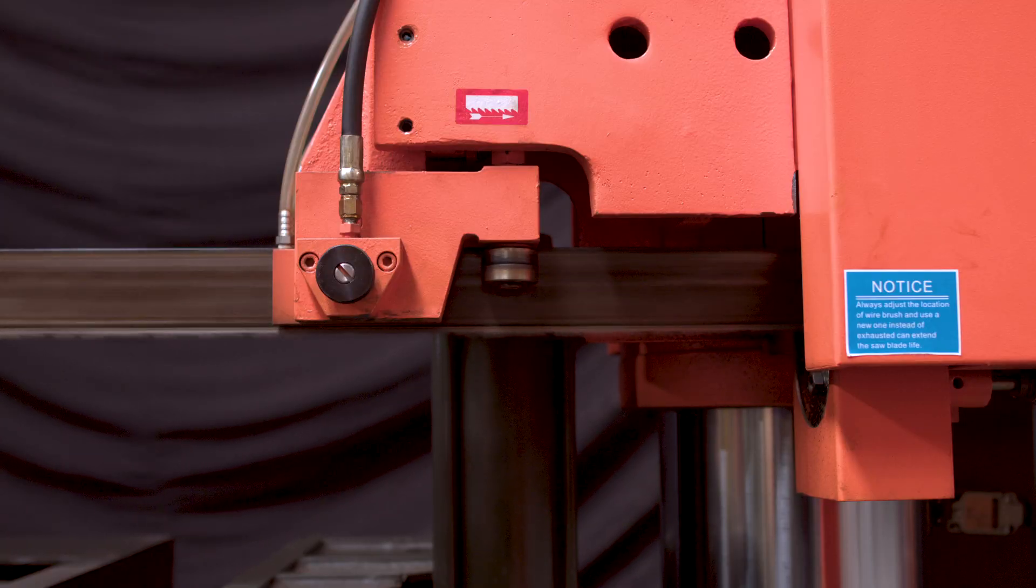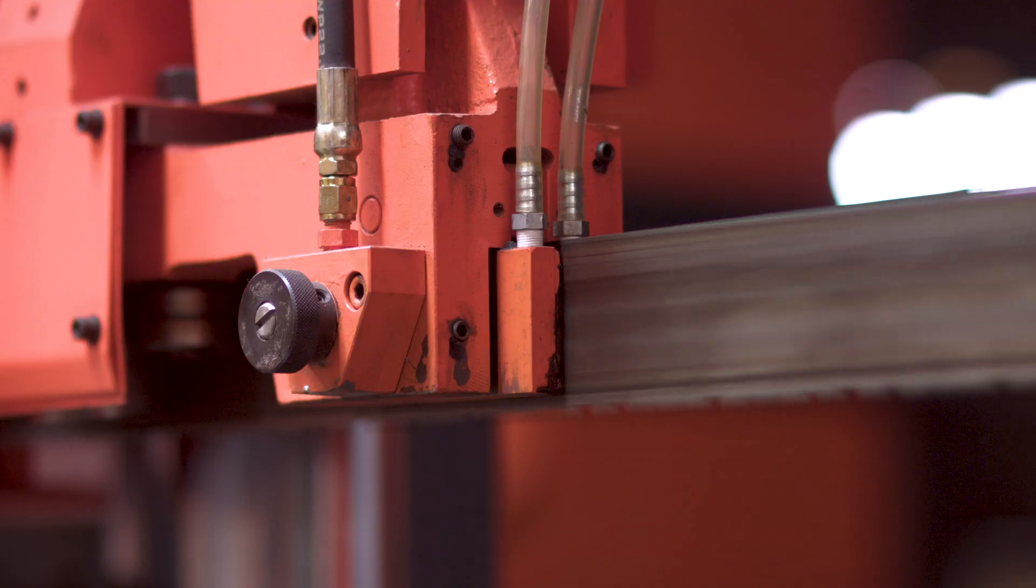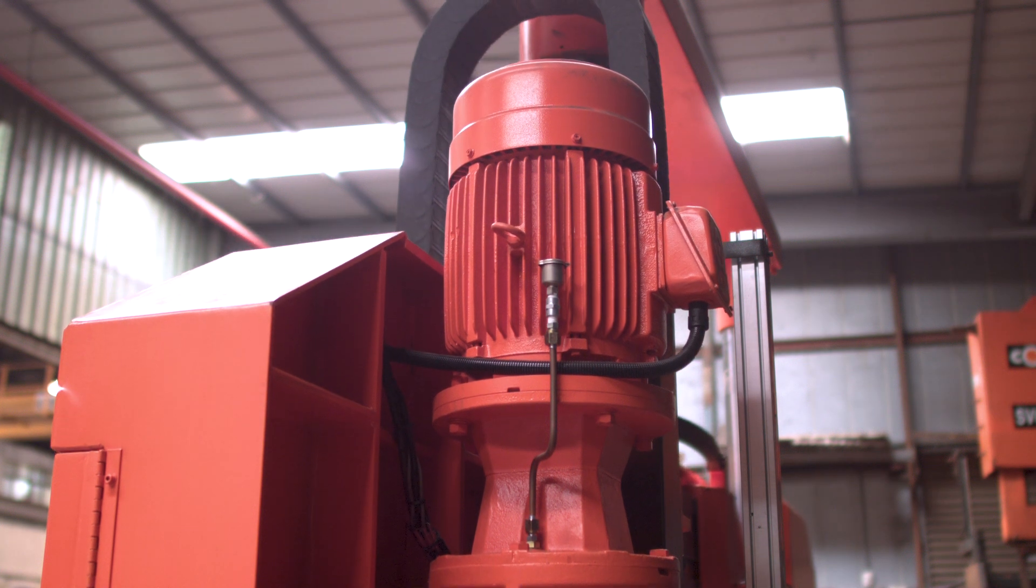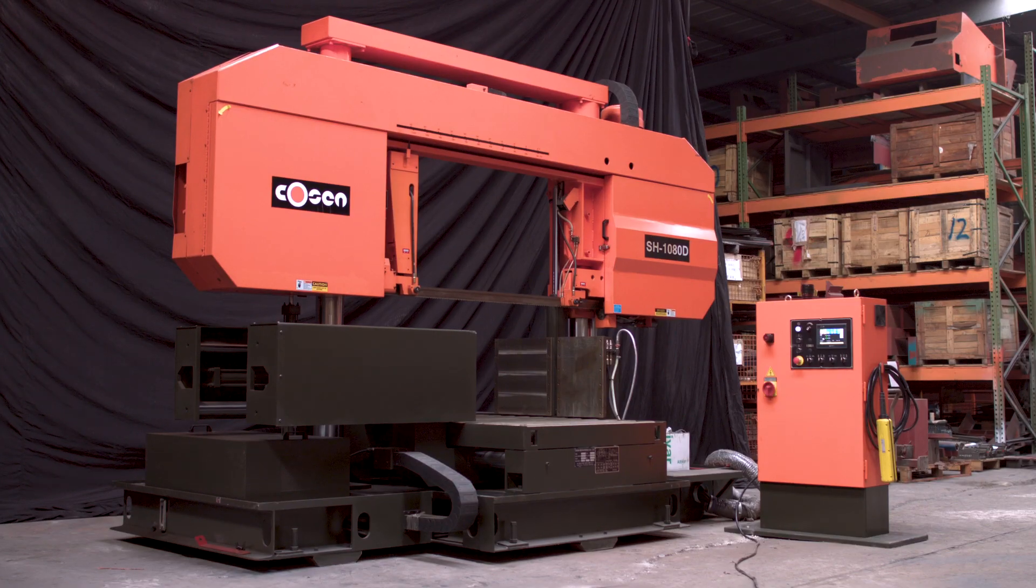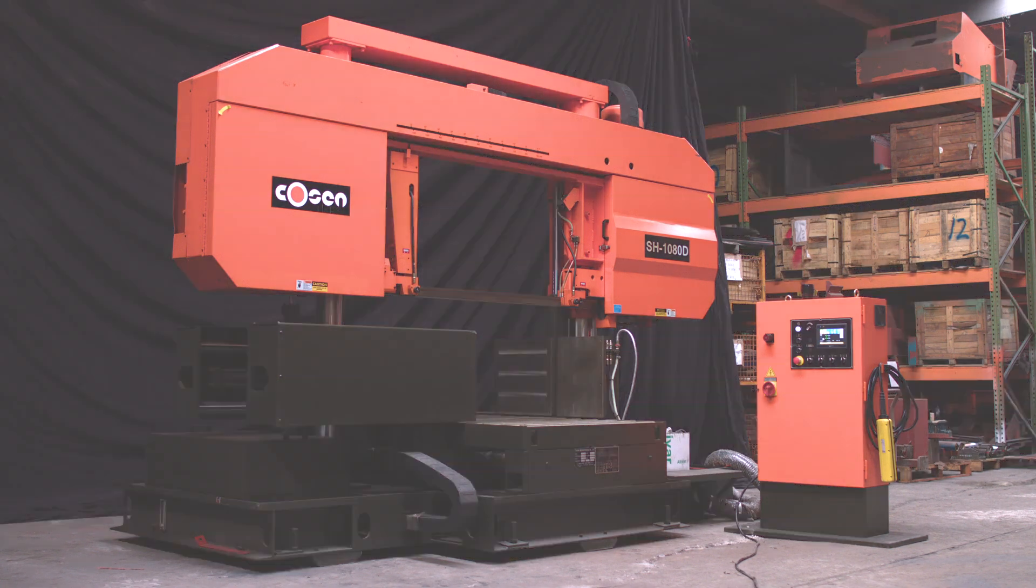Coming in at 22,000 pounds, the 1080D comes equipped with a 2.5-inch blade, a 15-horsepower blade motor, and a list of optional accessories which can meet the diverse cutting needs of many steel service centers and large cutting houses.